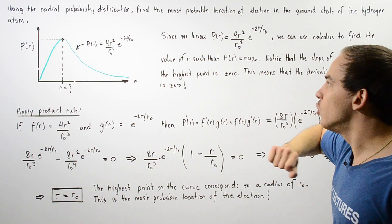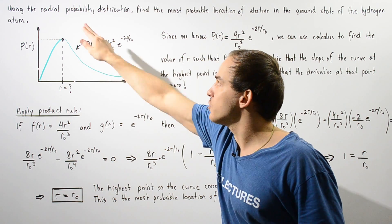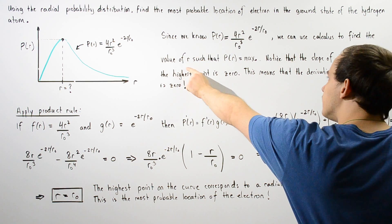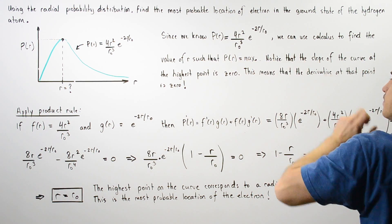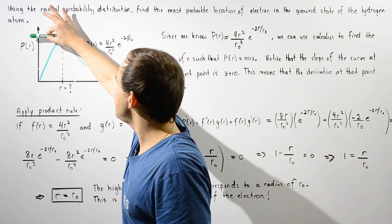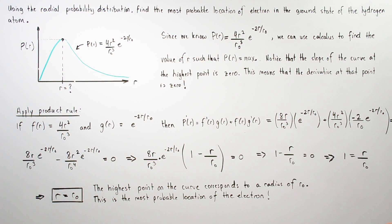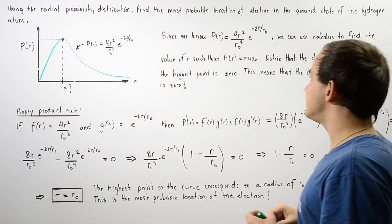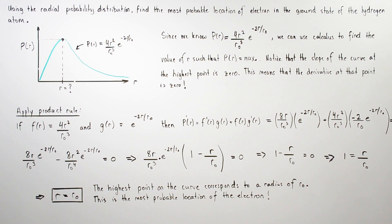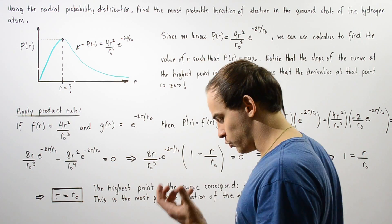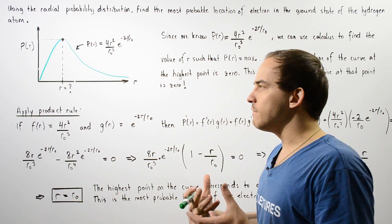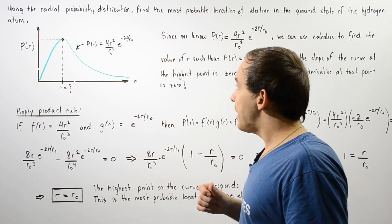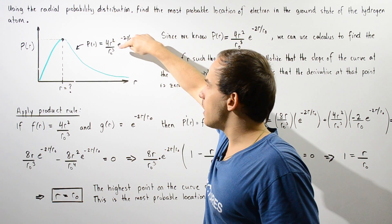Since we know the equation for the radial probability distribution, we can use calculus to find the value of r such that P(r) is a maximum. The slope of the curve at this maximum value is equal to zero, which means the derivative at that point is also equal to zero, because the derivative is the slope at that position along the curve.